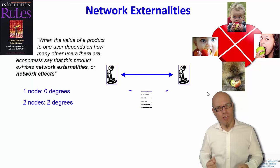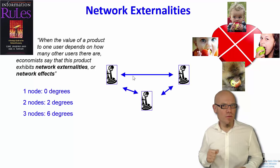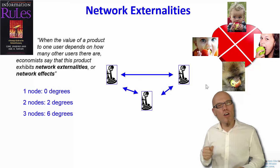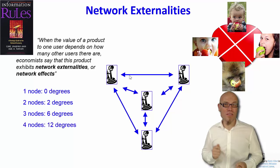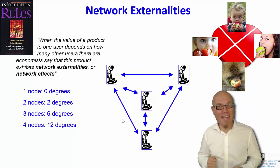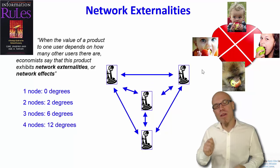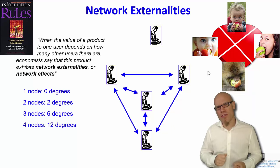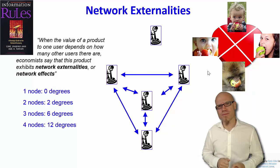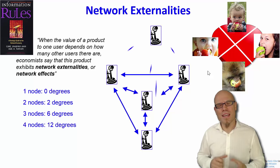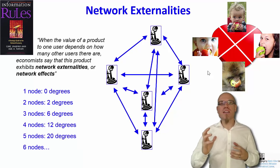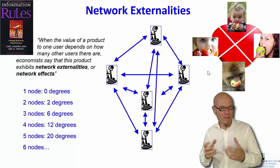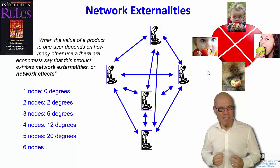Then came the third telephone — now they could already make six phone calls. When the fourth telephone was connected to this network, twelve phone calls were possible. And when the fifth phone was connected, twenty phone calls were possible. That means the number of possibilities increased much faster than the number of nodes — the number of people in the network — and that gives a lot of value for everybody in the network.